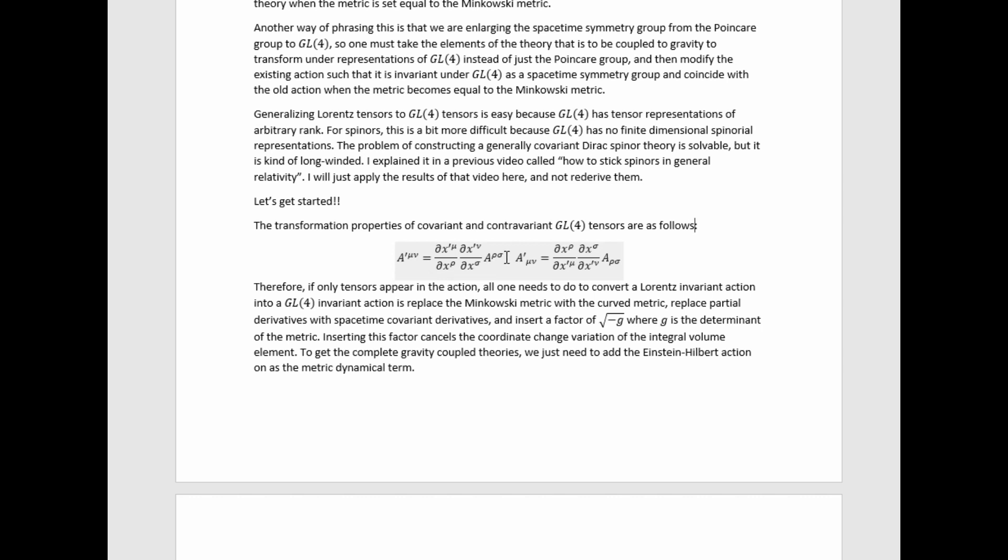So you can see that there's just one Jacobian for each index, and that generalizes for arbitrary rank tensors, whether it's rank 1, rank 0, which is just a scalar, and you get none of these.